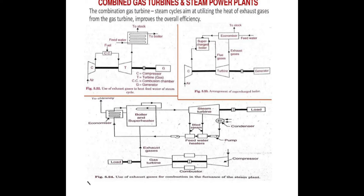First, we start with the gas turbine. In the gas turbine, the compressor and turbine are mounted on a shaft. When the compressor rotates, air is admitted from the atmosphere. At the end of compression, the pressure is increased, and this high-pressure air is supplied to the combustion chamber.